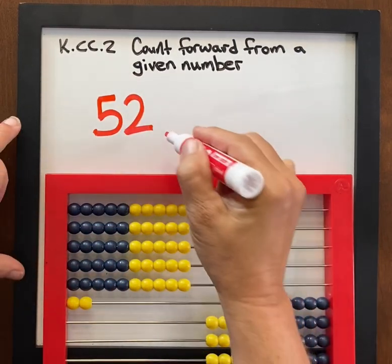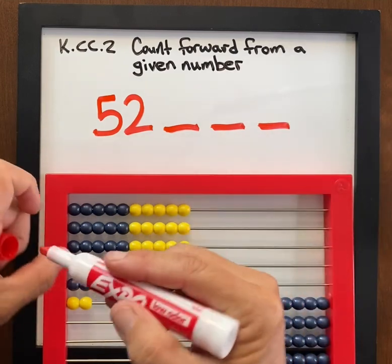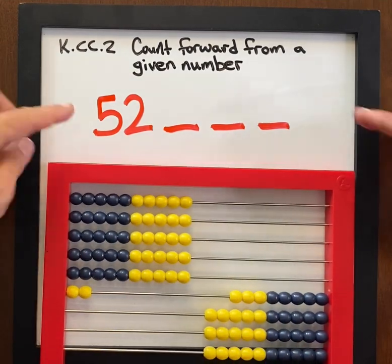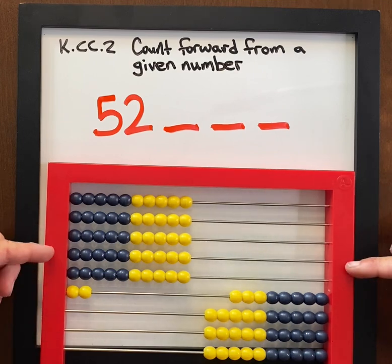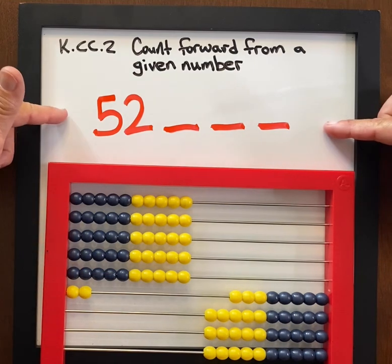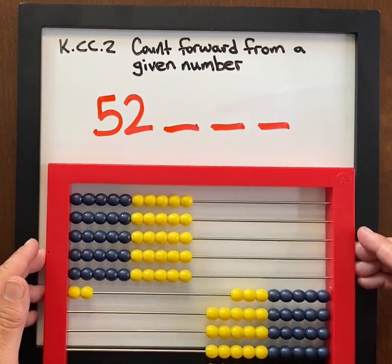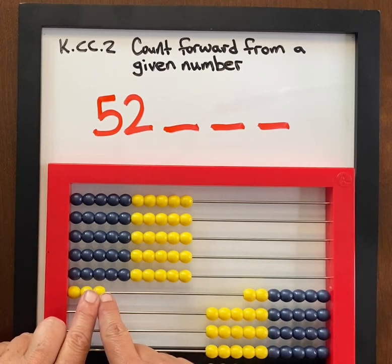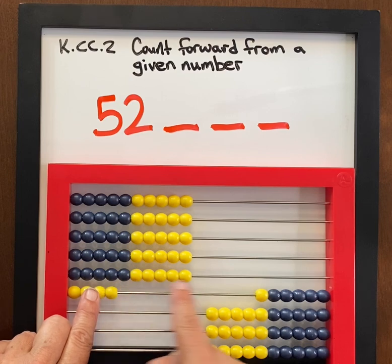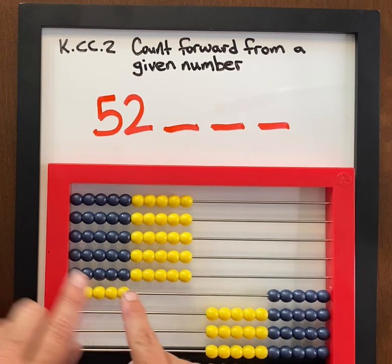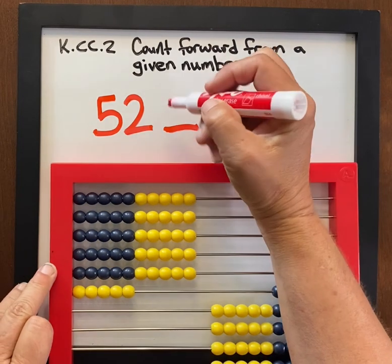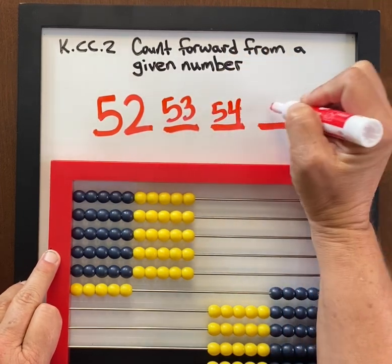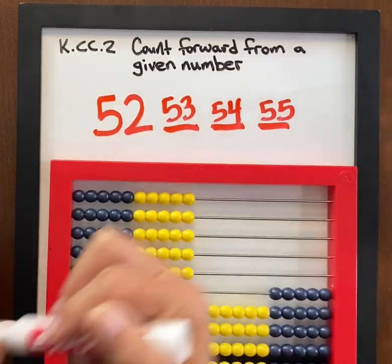Then I might ask them: what are the next three numbers? This abacus is helping bring this abstract concept back to a conceptual level, so that we can develop into abstract writing. So we have 5 tens 2. Let's count on: 5 tens 3, 5 tens 4, 5 tens 5. Let's go ahead and write that — 53, 54, 55.